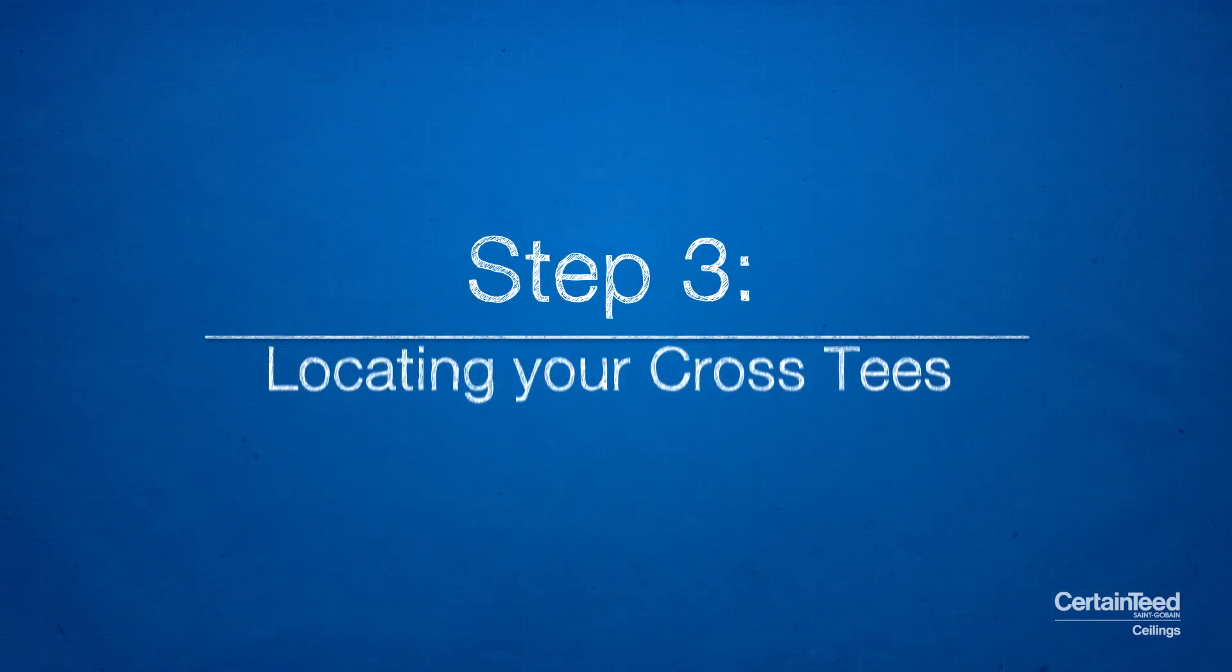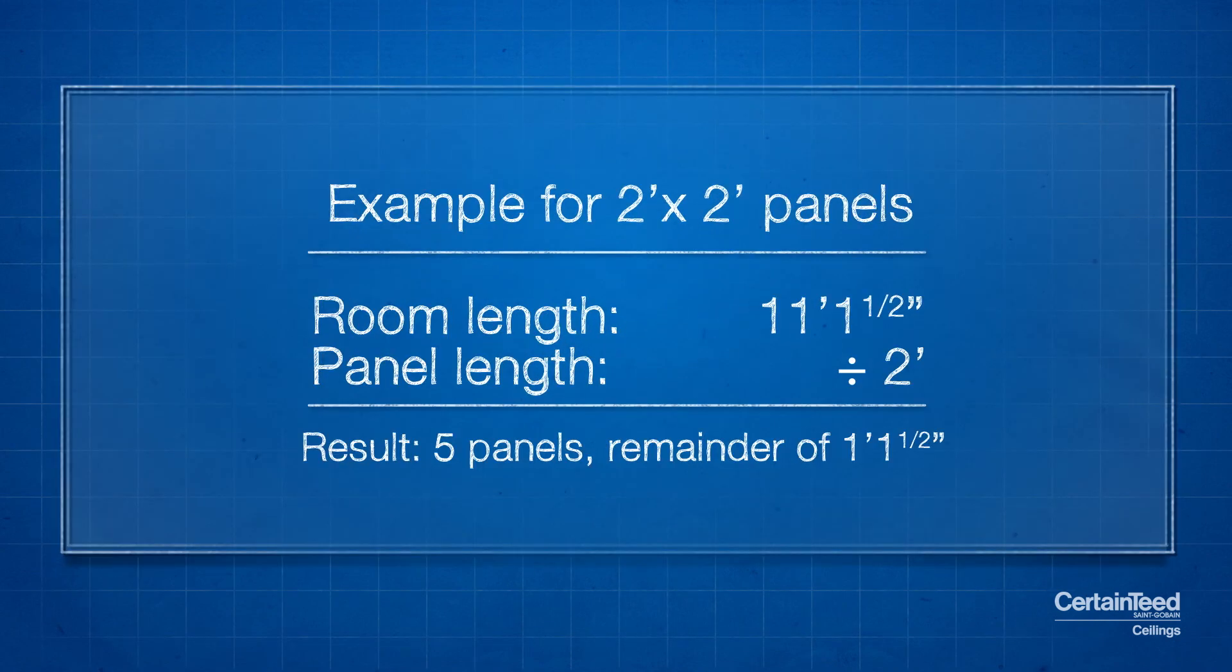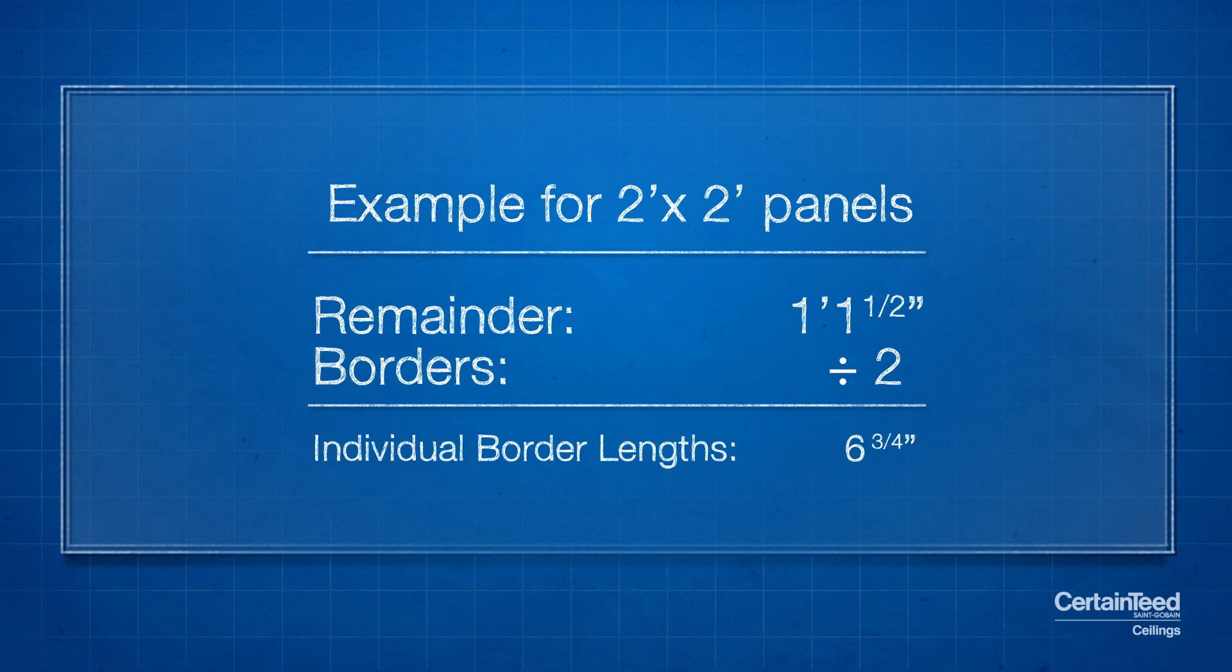Step 3. Locating your cross tees. Take the length of the room, in this case 11 foot 1 and a half inches. Follow the same steps outlined to locate the main tees.